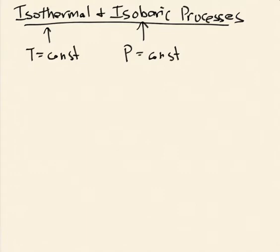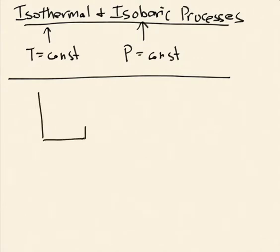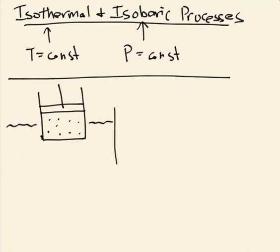Let's start with the isothermal case. What kind of process would be isothermal? We'll use the piston as our standard example. If you take a container with a movable piston, and you want to keep the temperature of the gas inside constant as you do stuff to it, the way to do that is to put it into what we might call a heat bath — a large volume of something, could be water, at a certain temperature T.